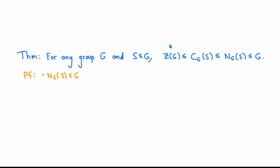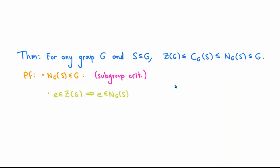We'll start by proving that the normalizer of any set S in G is a subgroup of G, and to do that we'll use the subgroup criteria. First, we want to prove that the normalizer is not empty. But the identity is an element of the center, and the center is a subset of the normalizer, so the identity element is an element of the normalizer of S in G for any group G and any subset S of G, which means that the normalizer is always non-empty.